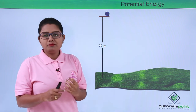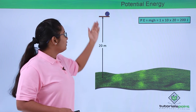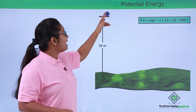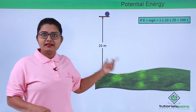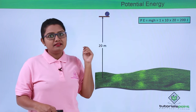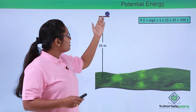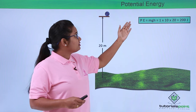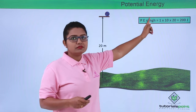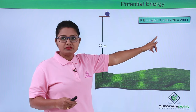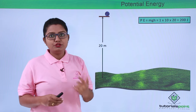We can easily find out the potential energy of this body by using the formula for potential energy. Let's suppose the body has a mass of 1 kg and the acceleration due to gravity is taken as 10 meters per second squared for simplicity. Using that information, we get the potential energy: mgh equals 1 times 10 times 20, which turns out to be 200 joules.